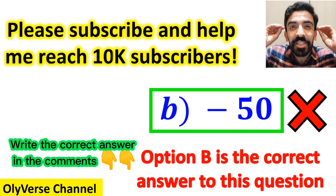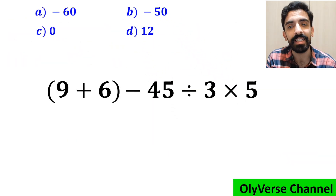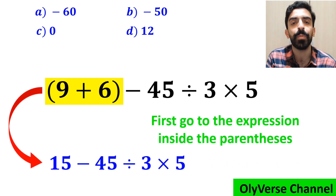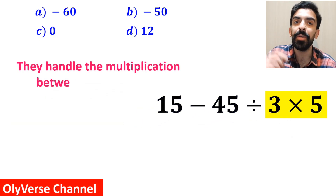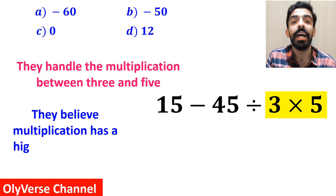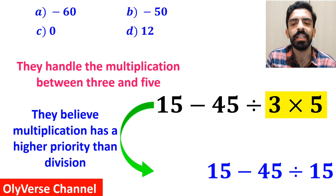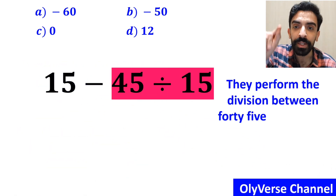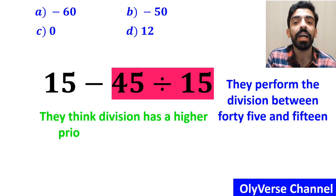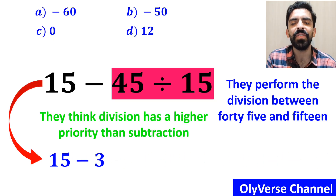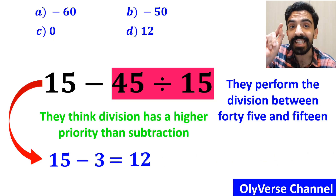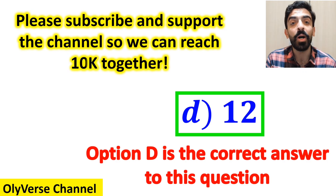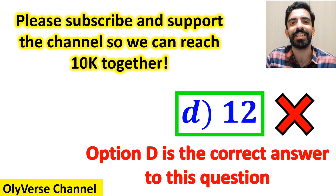Some other people, when solving this question, first go to the expression inside the parenthesis and write it as 15 minus 45, divided by 3, multiplied by 5. Next, they handle the multiplication between 3 and 5 first, because they believe multiplication has a higher priority than division. So they rewrite the expression as 15 minus 45, divided by 15. Then they perform the division between 45 and 15, simplifying to 15 minus 3, which gives them 12 — and they conclude that option D is the correct answer. But that answer is also wrong; we were tricked.